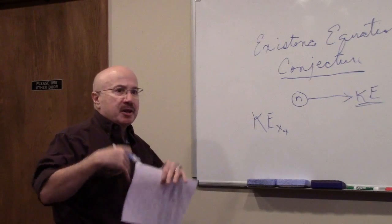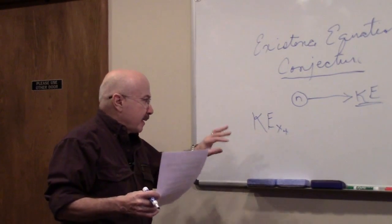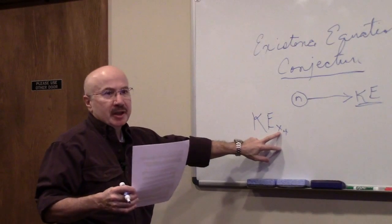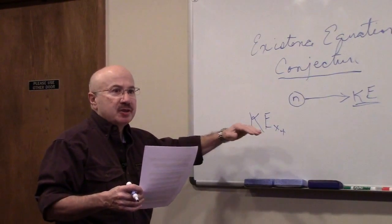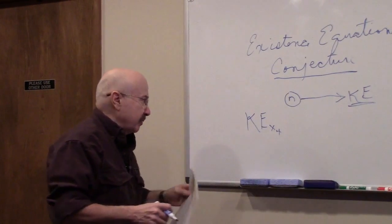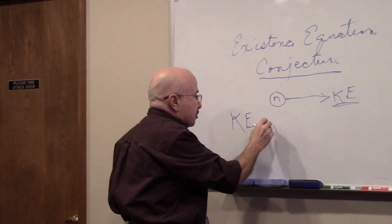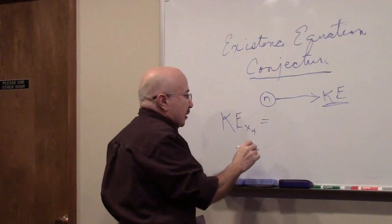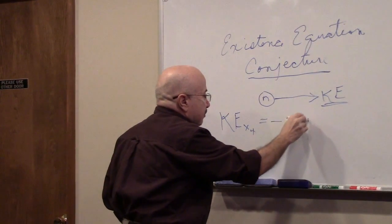Minkowski, Einstein brought it out using algebra, and Minkowski did it geometrically. So it was a good addition to the special theory of relativity. But it says the kinetic energy in the fourth dimension, which is in Minkowski's space, is minus 0.3 mc squared.